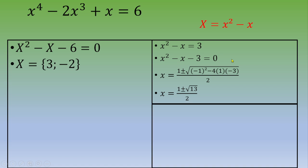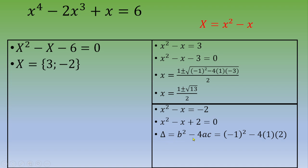Case 2: x² - x = -2. Moving -2 to the other side gives x² - x + 2 = 0. The discriminant is Δ = (-1)² - 4(1)(2) = 1 - 8 = -7. Since Δ < 0, there are no real roots. Therefore, the final values of x are (1 ± √13) / 2. Thanks for watching, and I hope to see you in the next video!